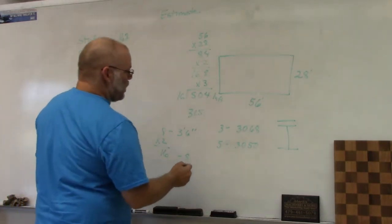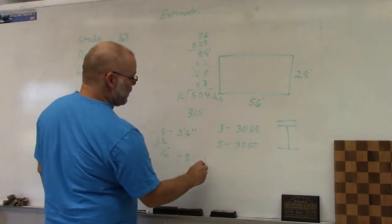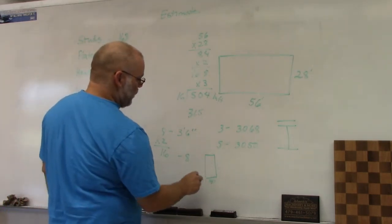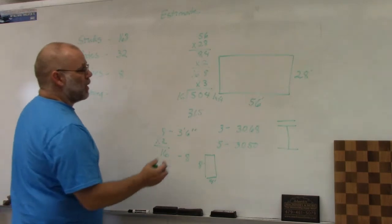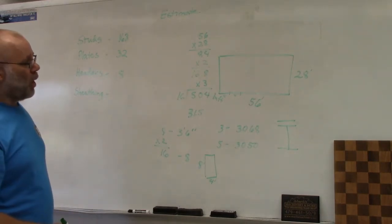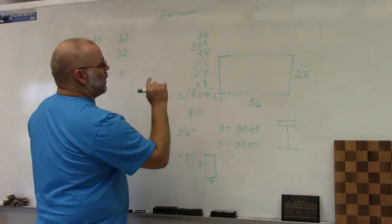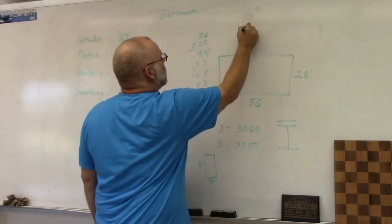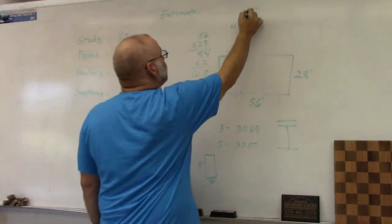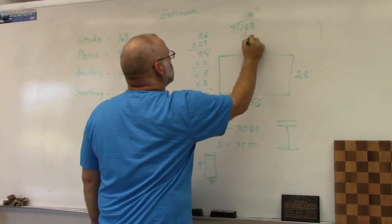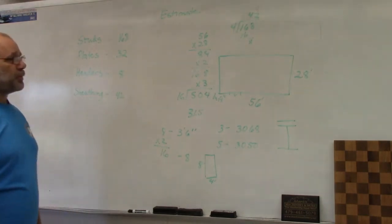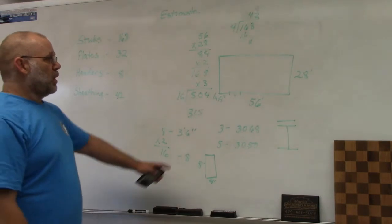The last thing is sheeting. When you put sheeting on the outside of a house, it goes in the vertical, so the bottom is four feet and the height is eight feet. I need one piece of sheeting for every four linear feet of wall. I'm going to go back to the original number 168 and divide by four feet. So I need 42 pieces of 7/16s OSB for my sheeting on the outside of the house.